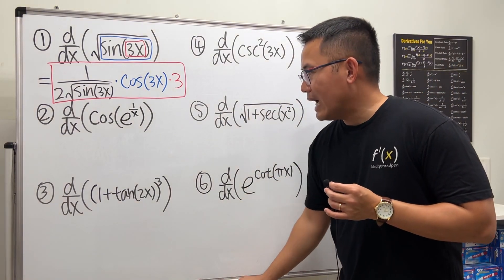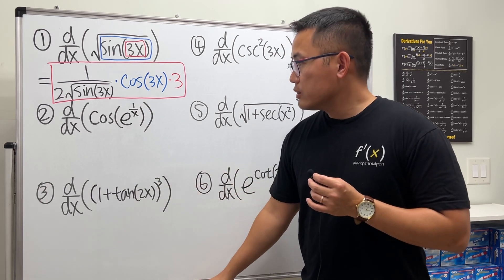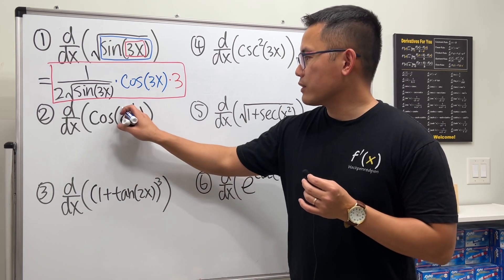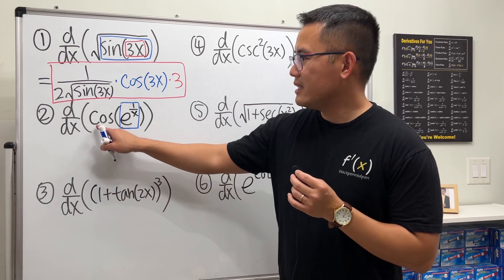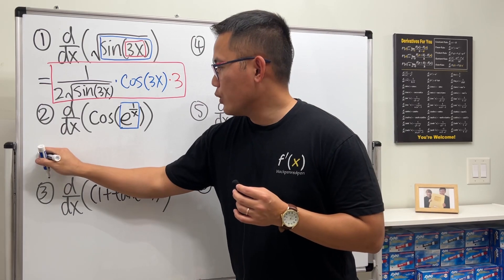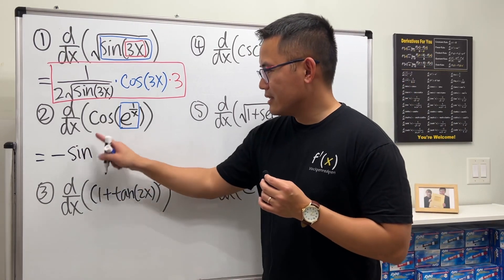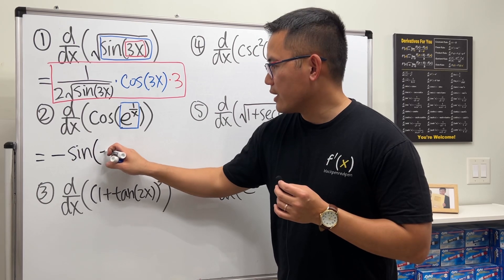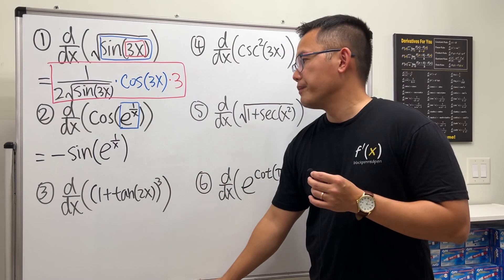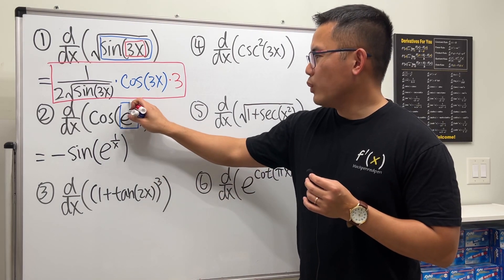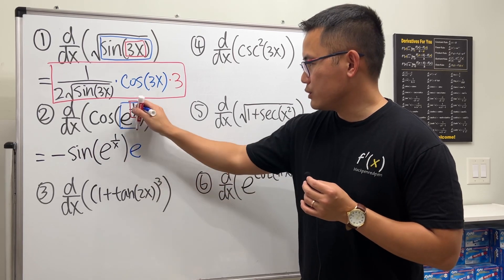For number 2, we have the derivative of cosine of e to the 1 over x. The outer function is cosine, so we have cosine of the box. The derivative of cosine: sine and cosine are best friends. The derivative of the cofunction is negative, so we first get negative, then we get sine. We write down e to the 1 over x inside. Then we differentiate this — the derivative of e to the box is just e to the box, so we repeat that.